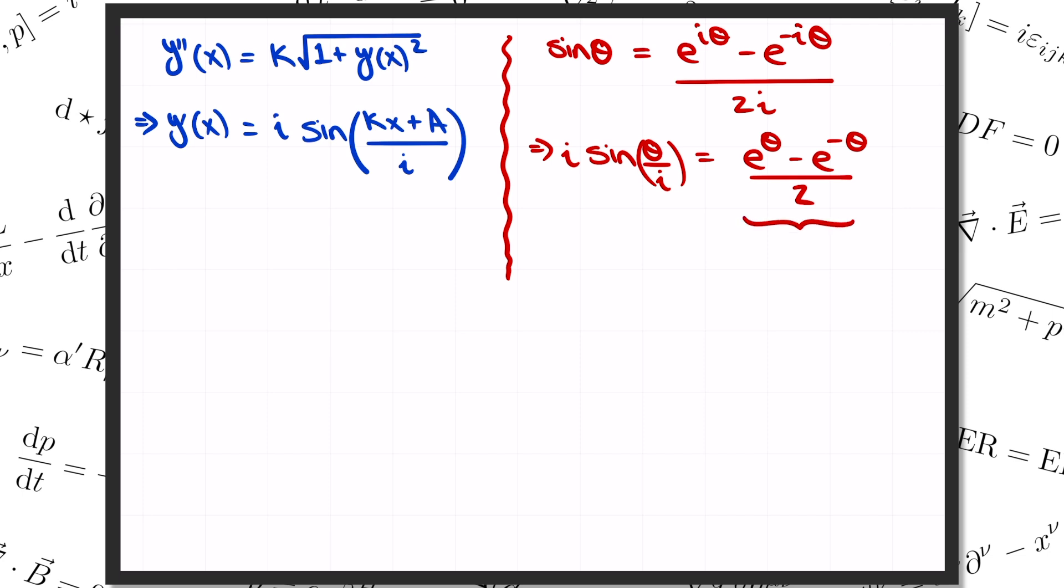This function has a special name, it's called the sinh of theta, which stands for hyperbolic sine. And so what we've learned is that our slope function y prime of x is totally real, and it's given by the sinh of kappa x plus a. Which again is just shorthand for e to the kappa x plus a minus e to the minus kappa x plus a, all divided by 2.